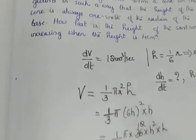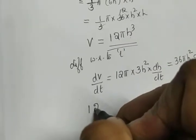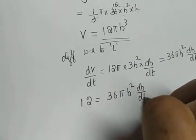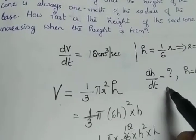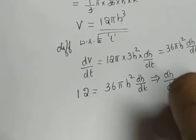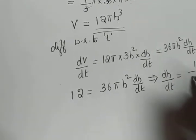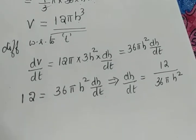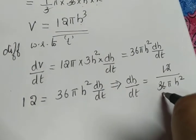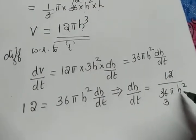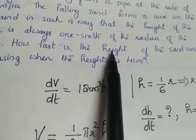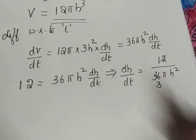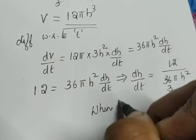The value of dV/dt is given as 12. So: 12 = 36πh² · dh/dt. Solving for dh/dt: dh/dt = 12 / (36πh²). Simplifying 12/36 gives 1/3, so dh/dt = 1/(3πh²). To find the value when h = 4 cm, we substitute h = 4.